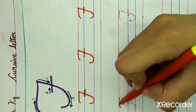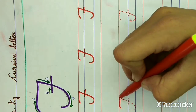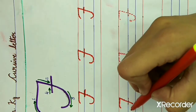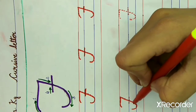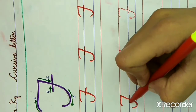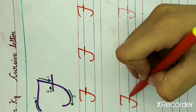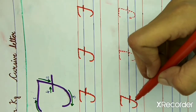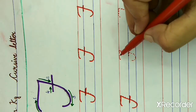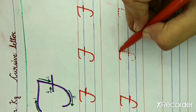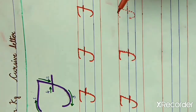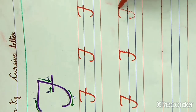Now again: a small curved line, a slanting line, then third line is small semicircle, and a slipping line. What is this? This is F. F for fish. What is the spelling of fish? F-I-S-H. Fish. F for fish.